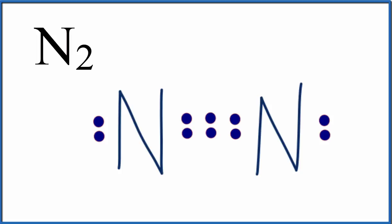So here's the Lewis structure for N2. You can see there's a triple bond in the middle, and then we have two lone pairs, one on either end of each nitrogen.